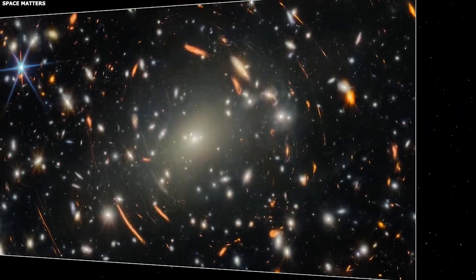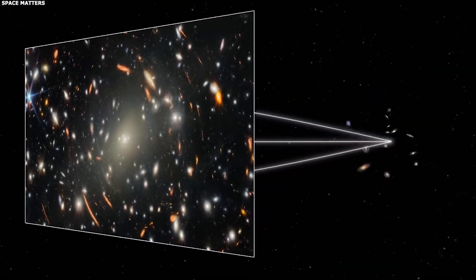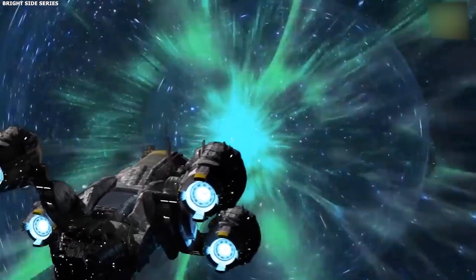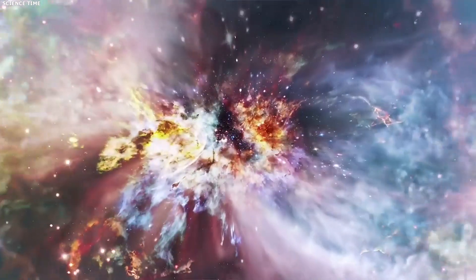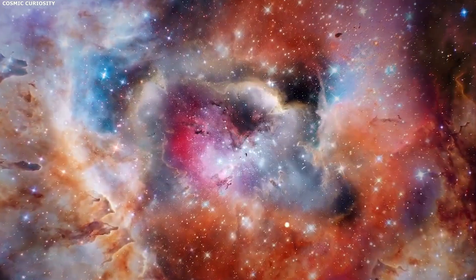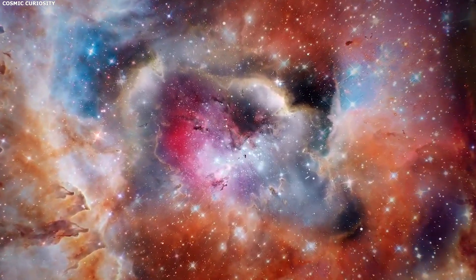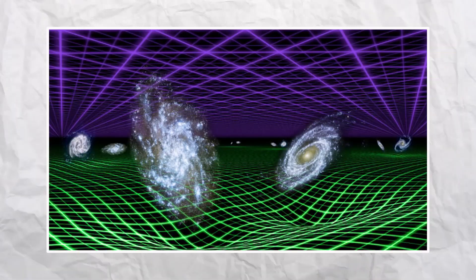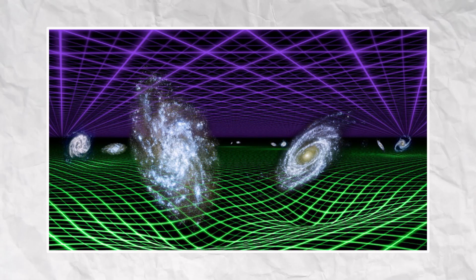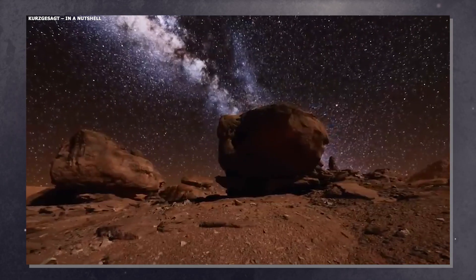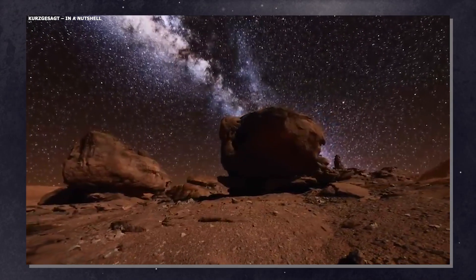Without it, we can't make sense of anything we see in the night sky. The theory also made predictions about the expansion of the universe. Space is getting bigger over time, and the rate at which it expands should be measurable and consistent. Lambda CDM gave us the exact numbers we should see.